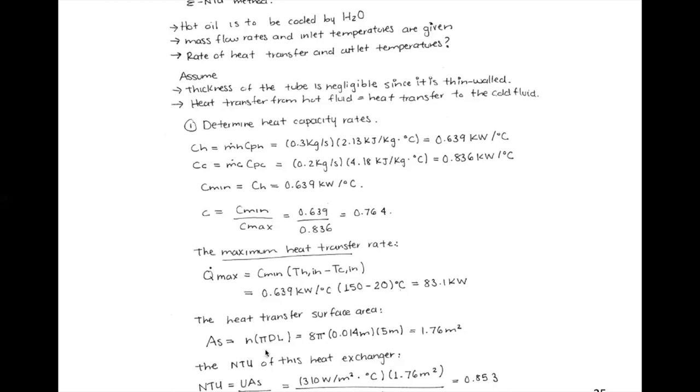To determine epsilon from the table, we need to calculate the surface area in order to find the NTU (number of transfer units). The surface area is A = π·D·L times the number of tubes. Remember, if length is not given, we calculate per 1 meter length — a common assumption throughout this course. The NTU equals the overall heat transfer coefficient times the surface area divided by C_min. This gives NTU = 0.85.